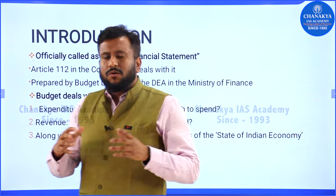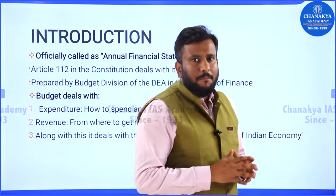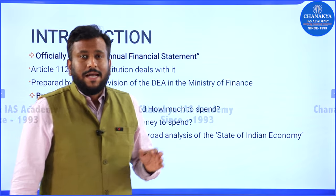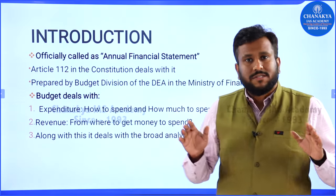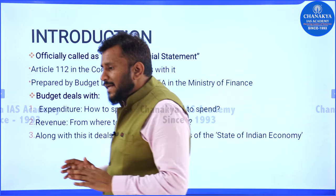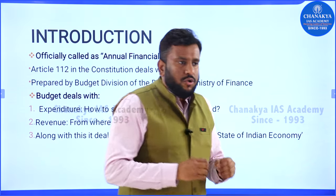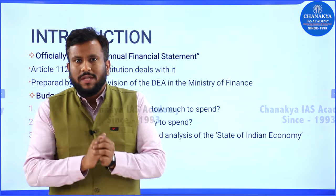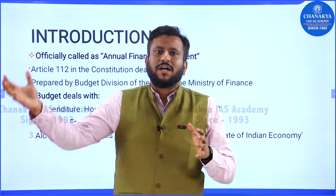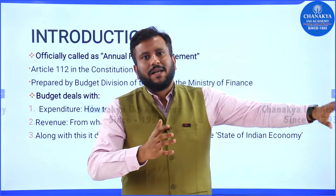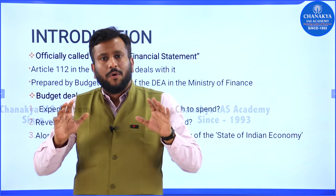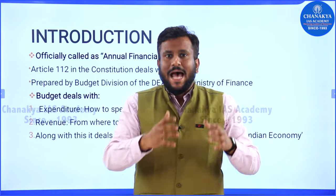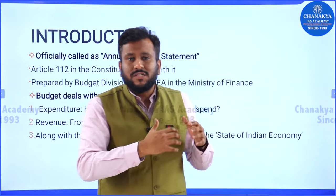First, let's understand the basics of what the budget is. In the Constitution, the word 'budget' is nowhere mentioned — under Article 112 it has been referred to as the Annual Financial Statement. The budget has two broad parts: the revenue aspect, which tells from where the government is going to get money, and the expenditure aspect, which tells where the government is going to spend that money.